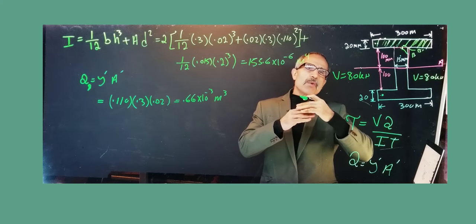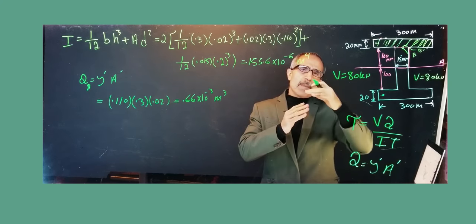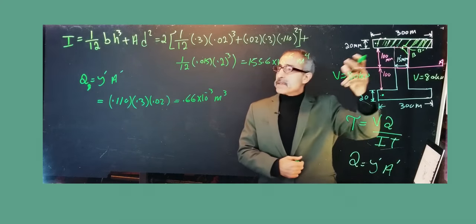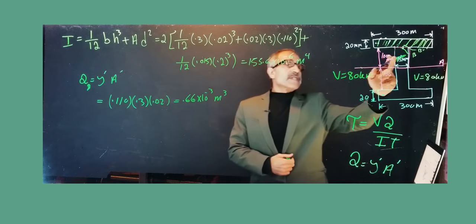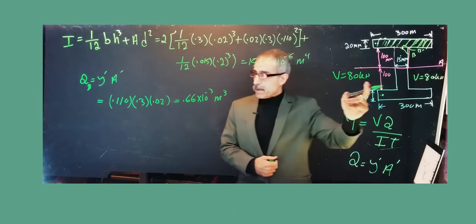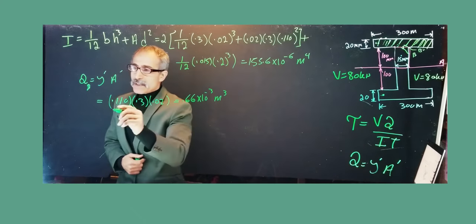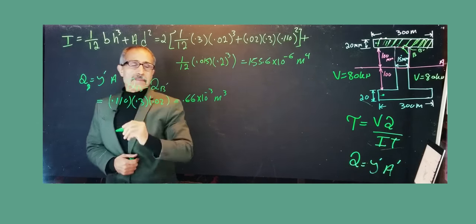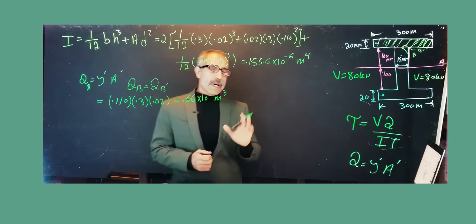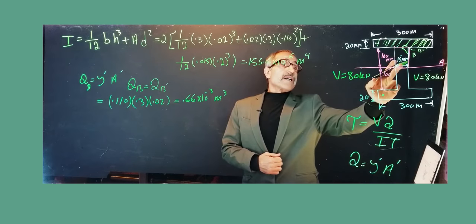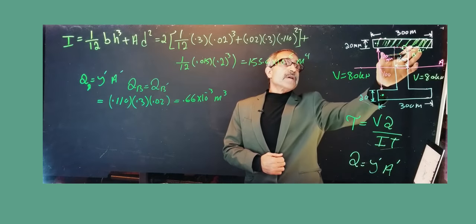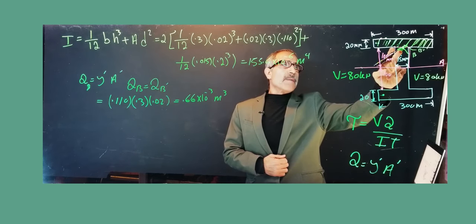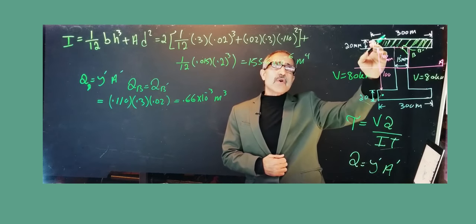What about Q at B'? B' is just above B — a hair away — one is inside the flange, one is inside the web, so they're basically on top of each other. The area above B' is the same as for B, and the distance from the centroid to the neutral axis is the same. So Q_B = Q_B'. The difference between the two points is the thickness t: for B it's 15 mm (web), but for B' it's 300 mm (flange), so the shear stress is much larger in the web than in the flange.